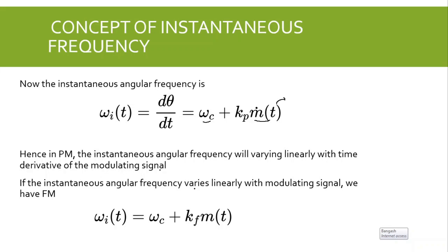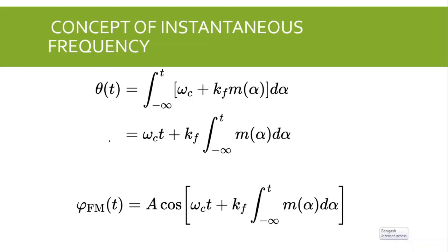If the instantaneous angular frequency varies linearly with the modulating signal itself, then we have FM: omega i(t) equals omega c plus kf·m(t), where kf is the frequency sensitivity constant. The angle of t is then the integration from minus infinity to t of this expression d·alpha. Since omega c integrates to omega c·t and kf is a constant, we get the FM equation: the signal is cosine of (omega c·t plus kf times the integral from minus infinity to t of m(alpha) d·alpha).